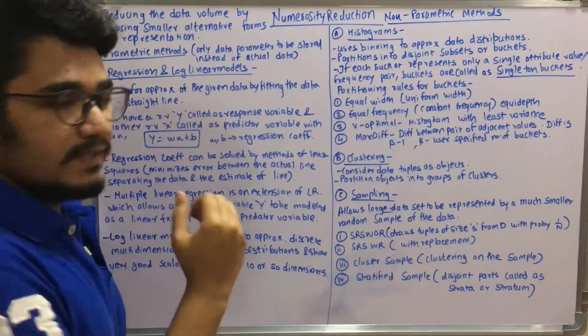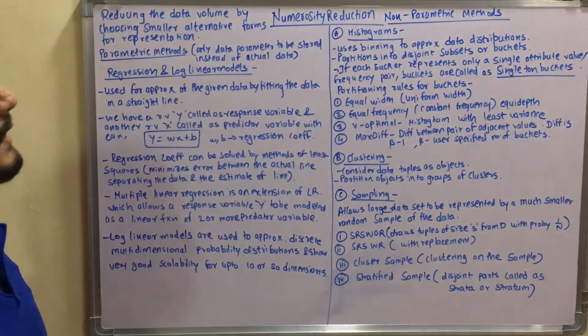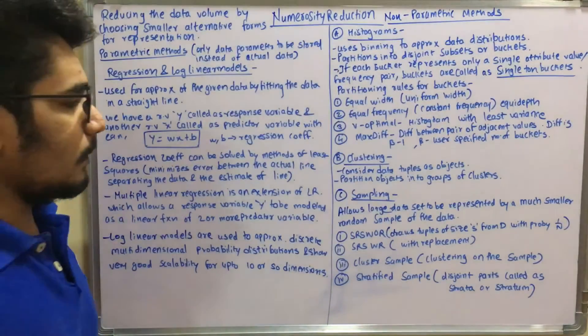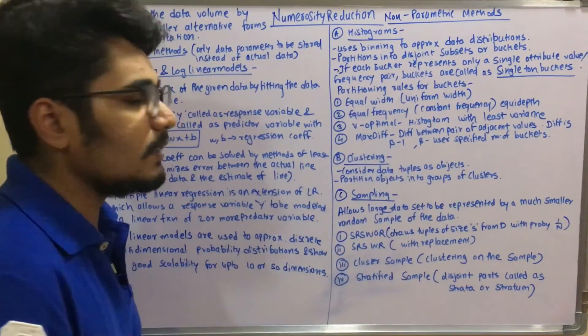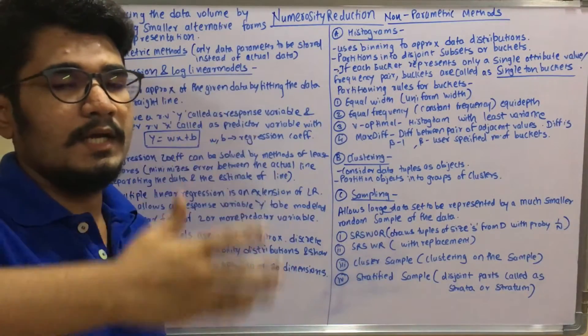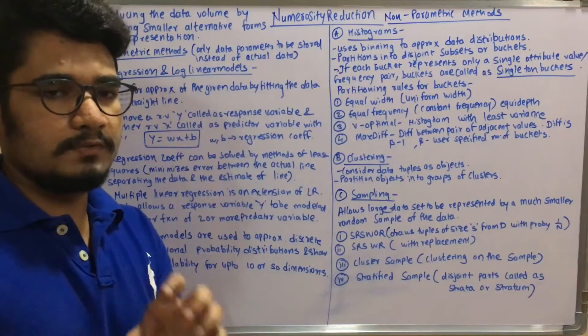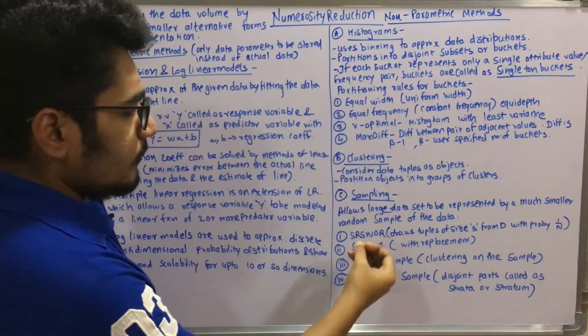So clustering is just segregating your various dimensions and then putting those input points which lie outside on the boundary and along the boundary. So you consider the data tuples as objects in that and you partition objects into groups of different clusters. Then you have the sampling technique, which is the most important thing in numerosity data set reduction under non-parametric models.